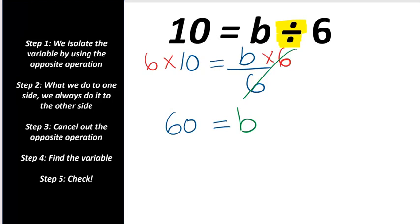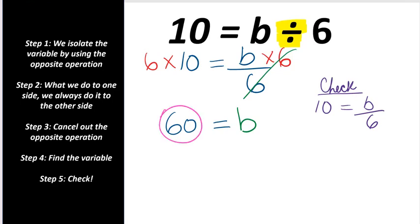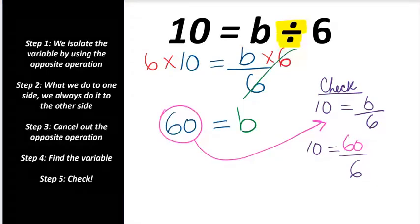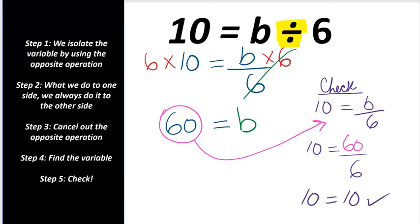Let's check our work and copy down the equation. We are going to substitute 60 inside the equation. 60 divided by 6 is 10 — right side equals the left side. Give yourself a check mark.